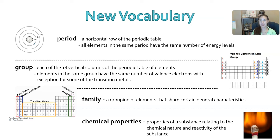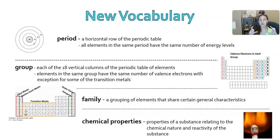The first word is 'period' — a horizontal row on the periodic table, meaning side to side. All elements in the same period have the same number of energy levels. An energy level is the same thing as an electron shell — those rings on the outer parts of an atom. Electrons are on those energy levels, while protons and neutrons are in the nucleus.